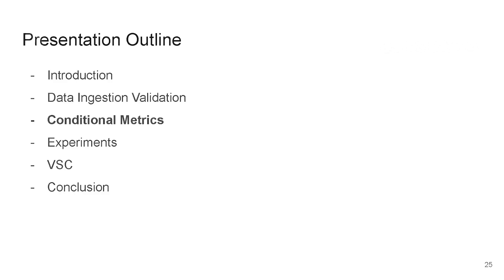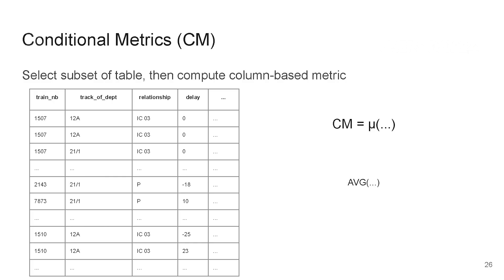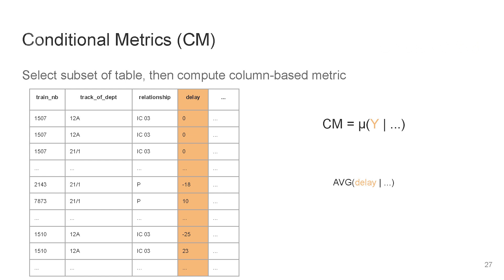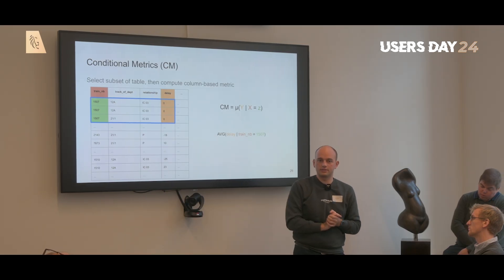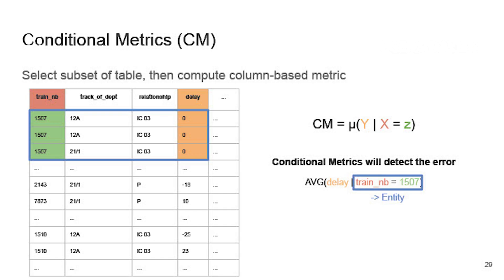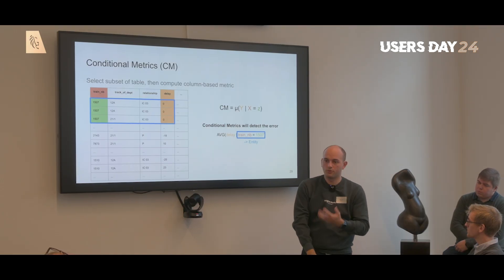That is why we propose conditional metrics. These conditional metrics select a subset of the table and then compute the column-based metric on that subset. For example, we take the average of the delay column, computed conditionally where the train number equals 1507. We then get the average delay for just that specific train in our dataset — already a much smaller subset. We call this last conditional part the entity — this will become more important later in the presentation.